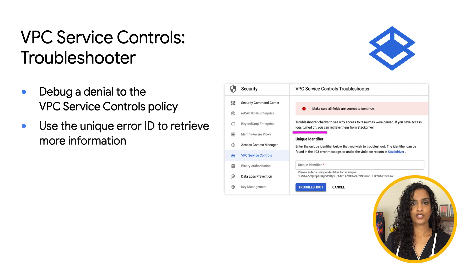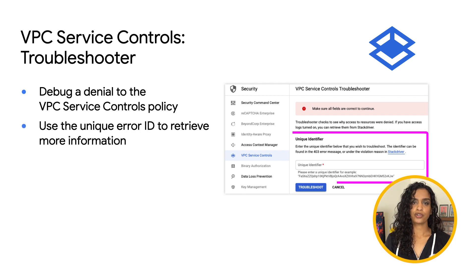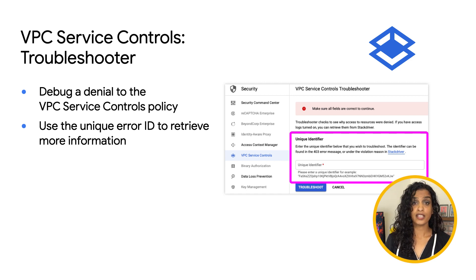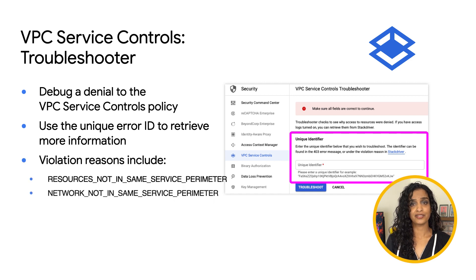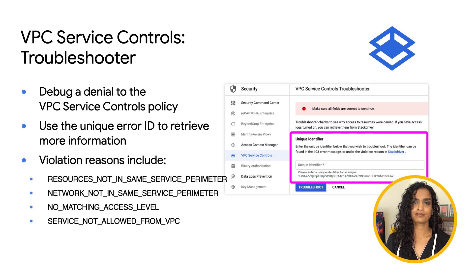Use the VPC Service Controls Troubleshooter via the Logs Explorer or from the VPC Service Controls page. Once you enter a unique ID for the logged error, you'll be provided with one of the violation reasons for further insights into the denial. Very handy for confirming and defining your service perimeters.